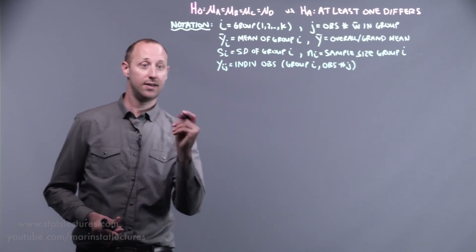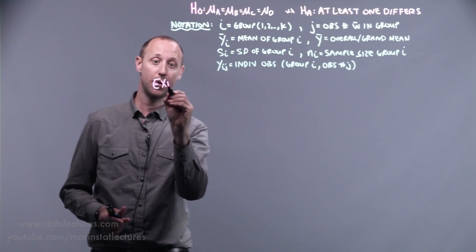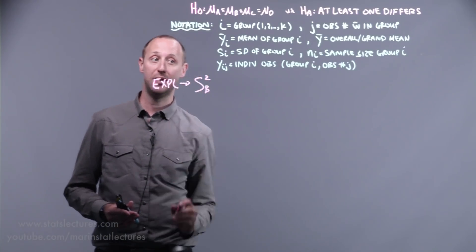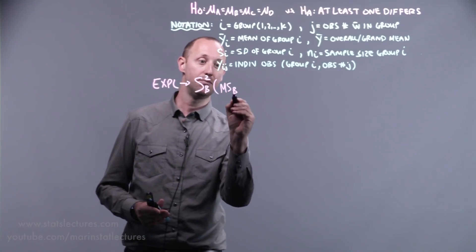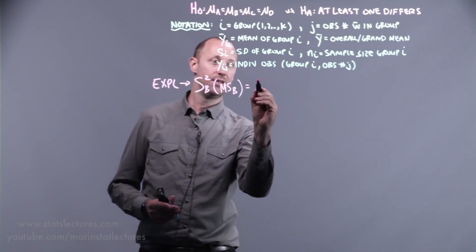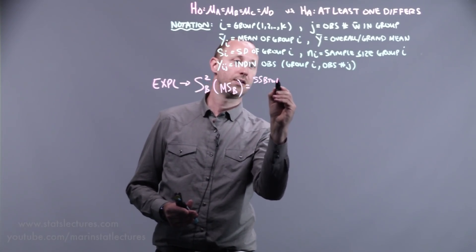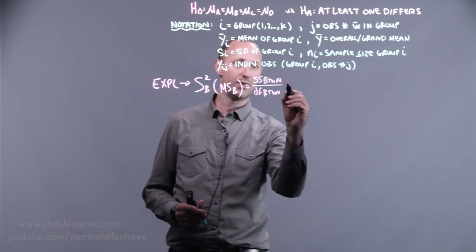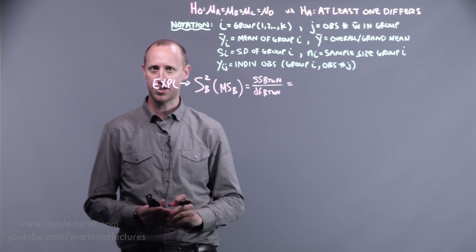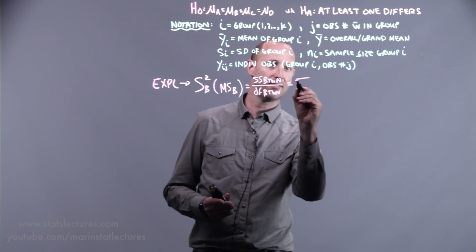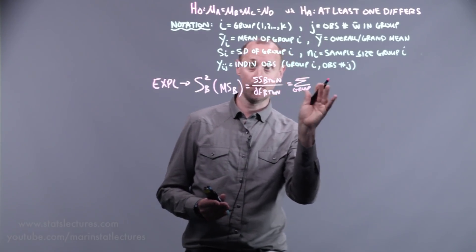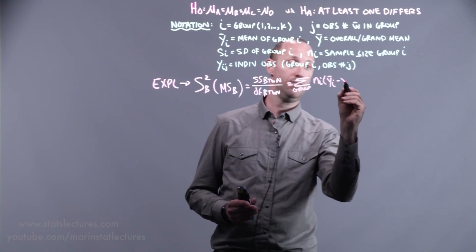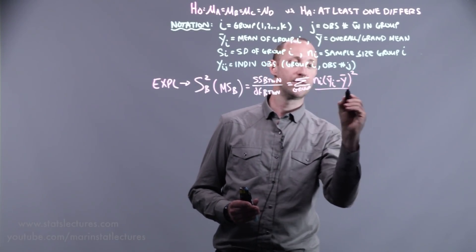So we saw that we can take the total variability and separate it into two parts. That which is explained by diet, and that we signified as the variance between diets, or sometimes called the mean square between. And that was the sum of squares between, divided by its degrees of freedom, the degrees of freedom between groups. We can think of this as we're going to sum over all the groups, so group one, two, three, four. What's the sample size in each group, and how far is the group specific mean from the overall mean, squared,